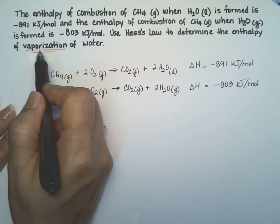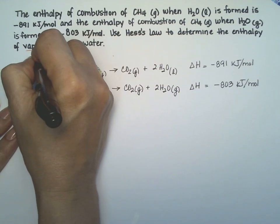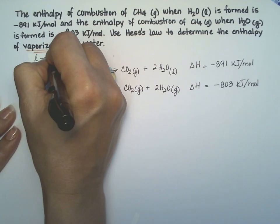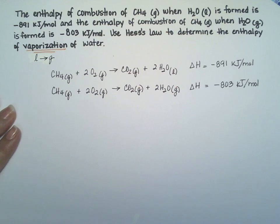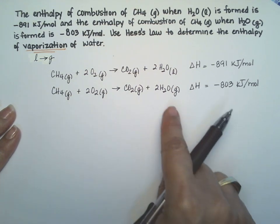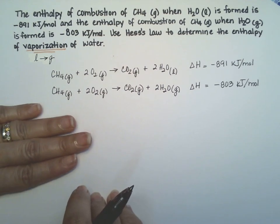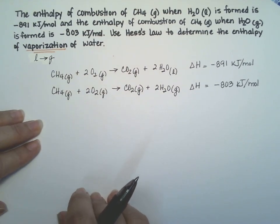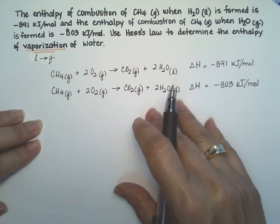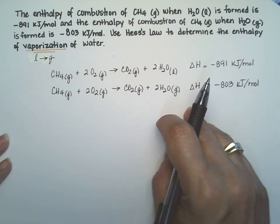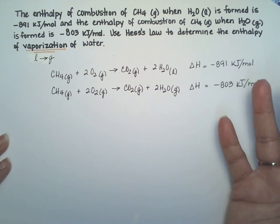And they want the vaporization process. Vaporization is the process in which a liquid goes to a gas. So we need water liquid on the reagent side of the equation, and we need water gas in the product side of the equation. And that's the way that we're going to use Hess's law.